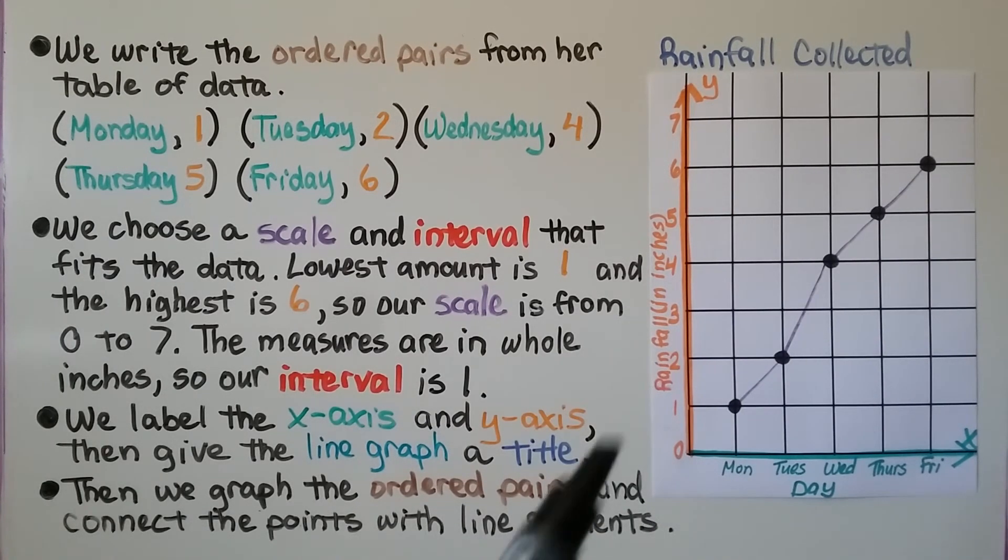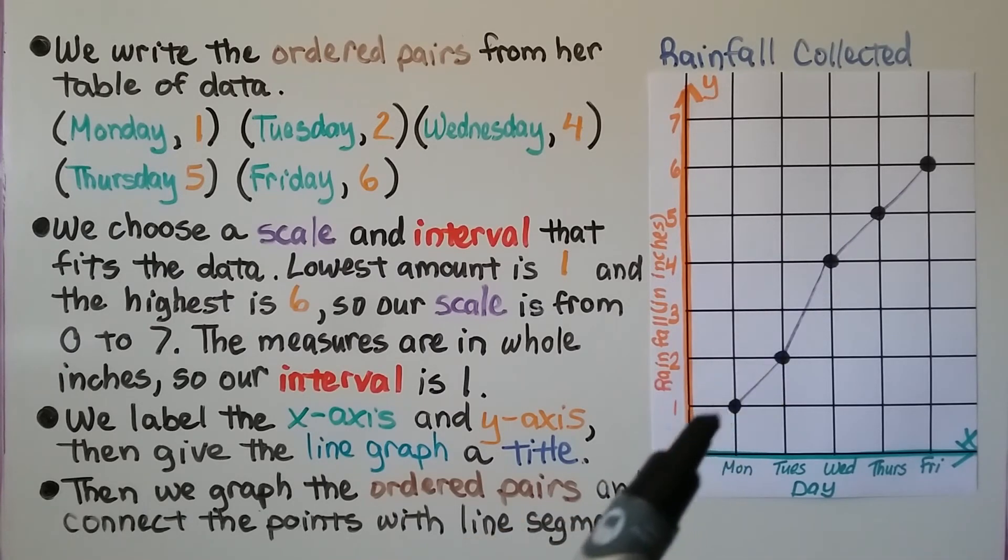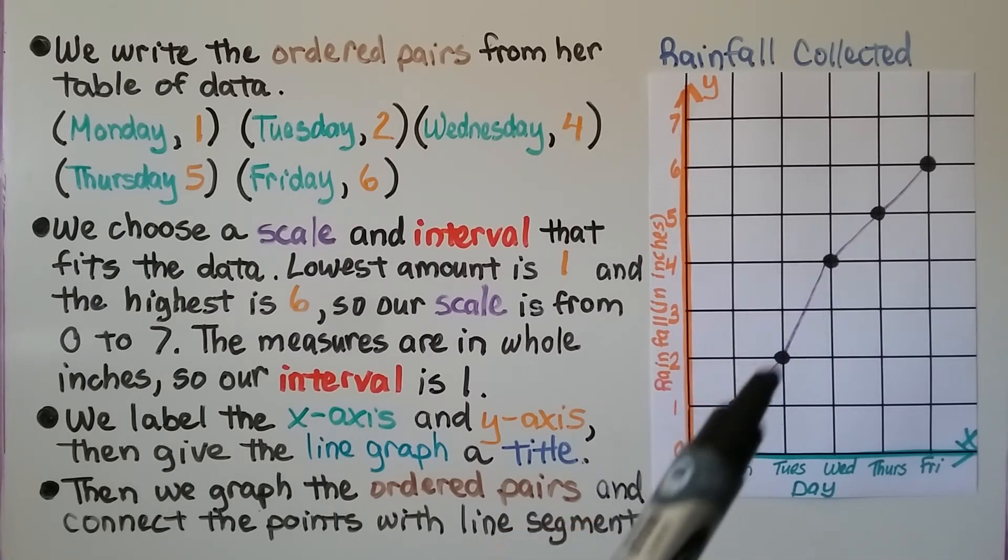We can see that there was more rain between Tuesday and Wednesday than the other days. See how it went up two units?